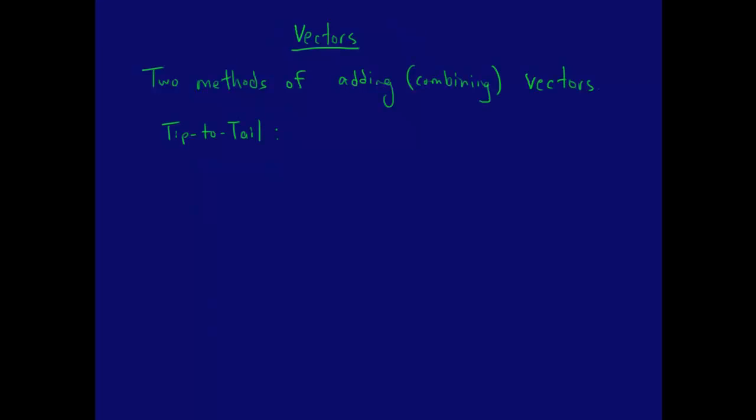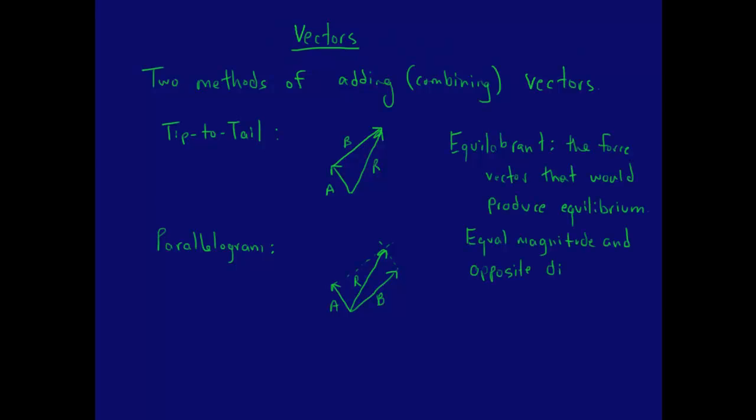There are two ways to add or combine vectors: the tip-to-tail method and the parallelogram method. The equilibrant is the vector you could add to create equilibrium. The equilibrant has the same magnitude and opposite direction as the resultant.